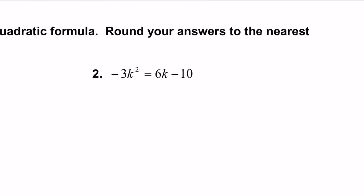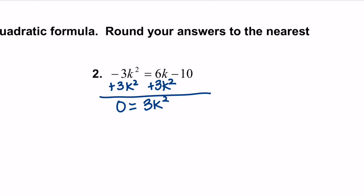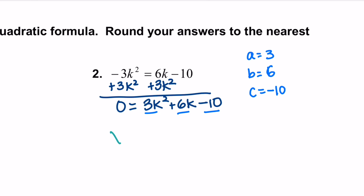For the next problem, the first step is to set it equal to 0. We want the k squared term to be positive so we can check if it will factor. So we add 3k² to both sides. Keep in mind the quadratic formula will work whether the a value is positive or negative, so it doesn't really matter which way you bring it — but if you were trying to factor first, you'd want a positive value. Now write down a equals 3, b equals 6, and c equals negative 10.